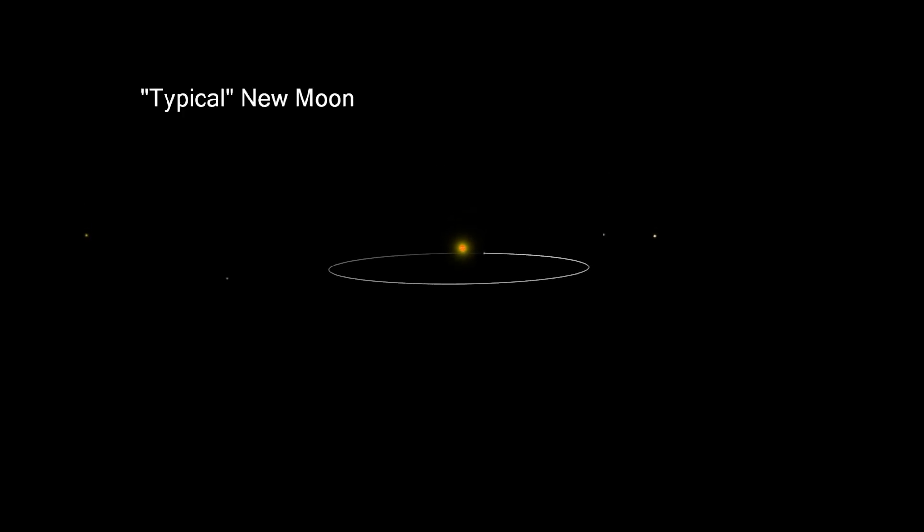If we line up the earth and sun carefully and follow the path of the moon, you can see that it misses the sun and passes above it. Because we're looking at the dark side of the moon, we see a new moon.